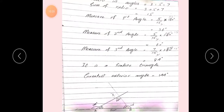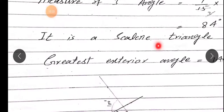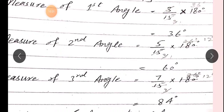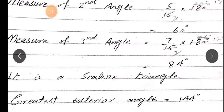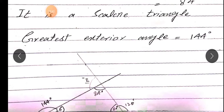Ab pehle iski diagram draw karte hain. Type to hamein yahan se hi pata chal jaaye - dekho, teenon jo angles hain, different hain: 36, 60, aur 84. To agar teenon angles jo hain woh different hon, to hamaari kaun si type hoti hai triangle ki? It is a scalene triangle.